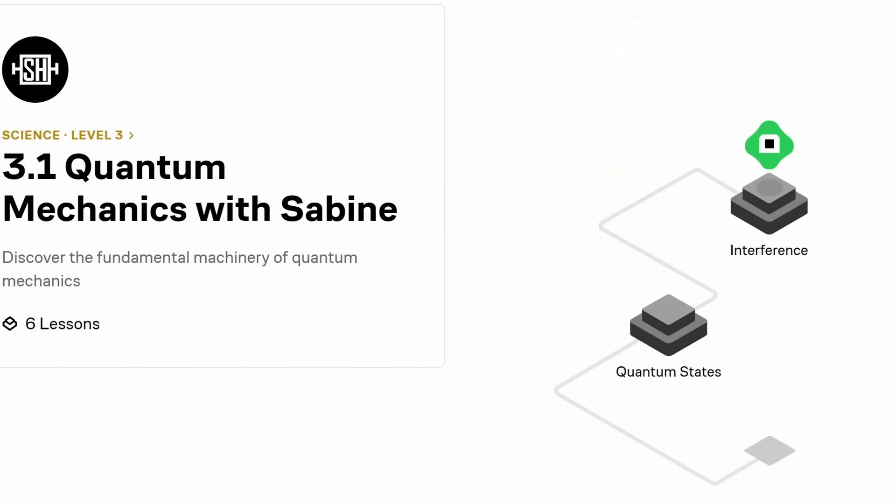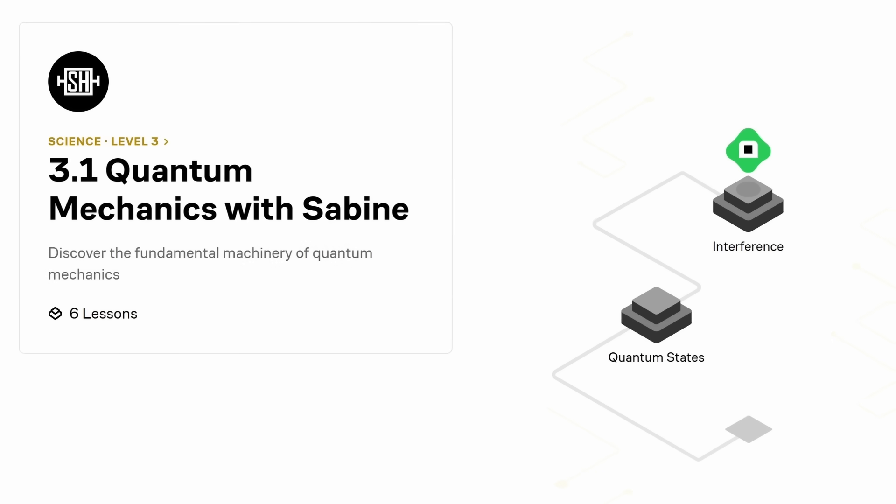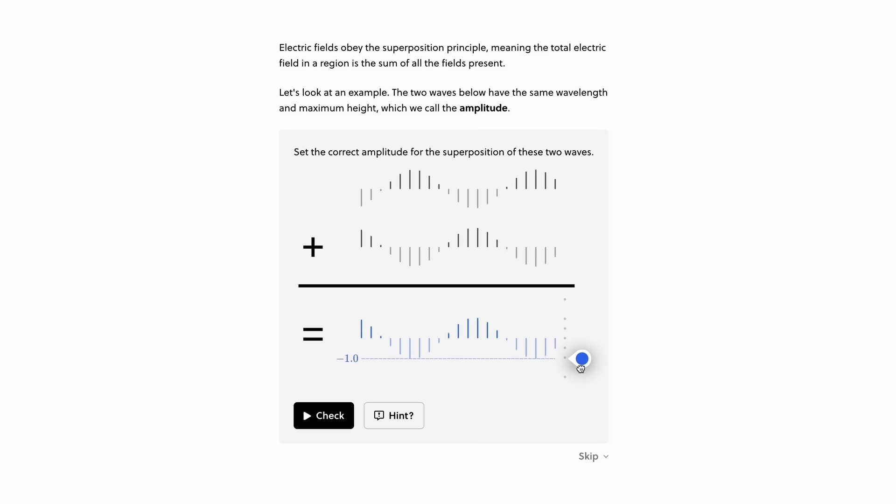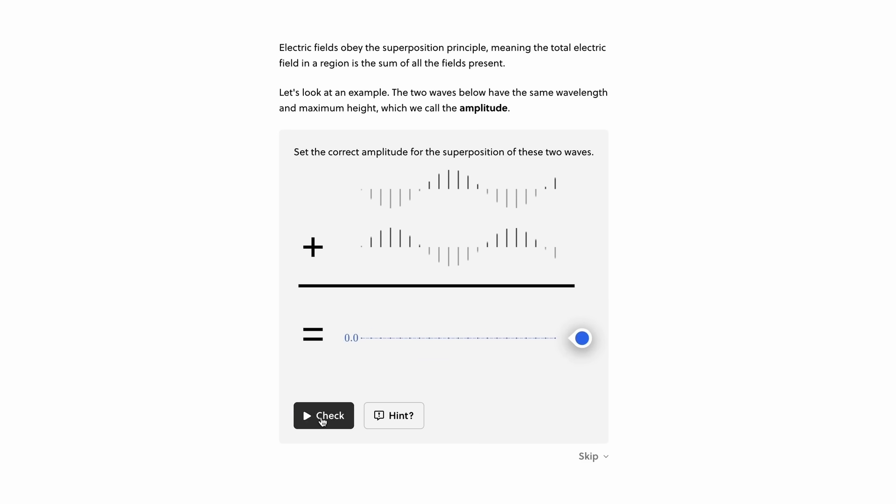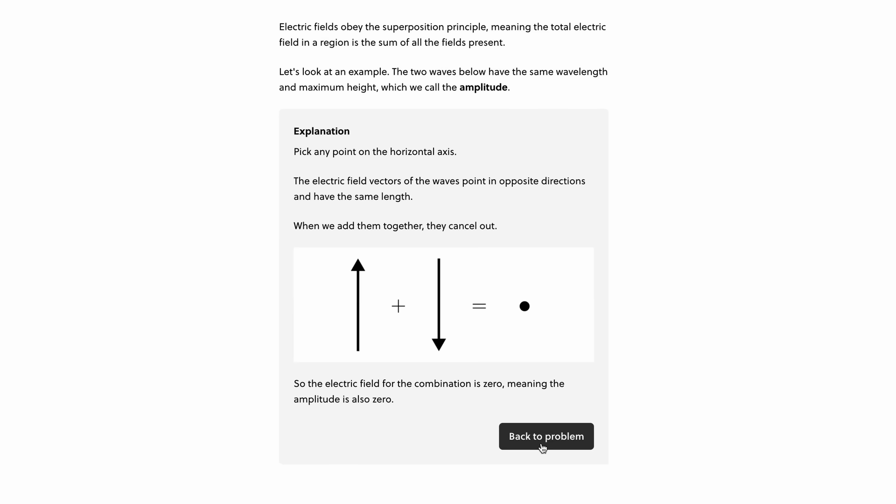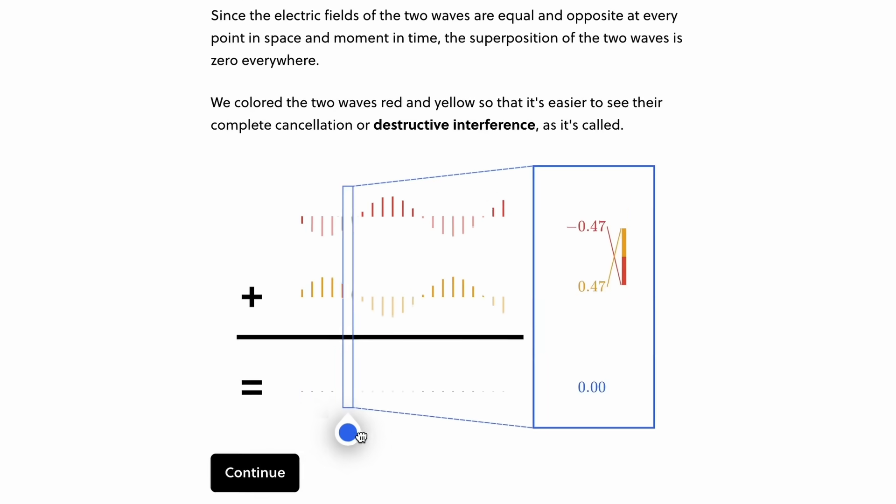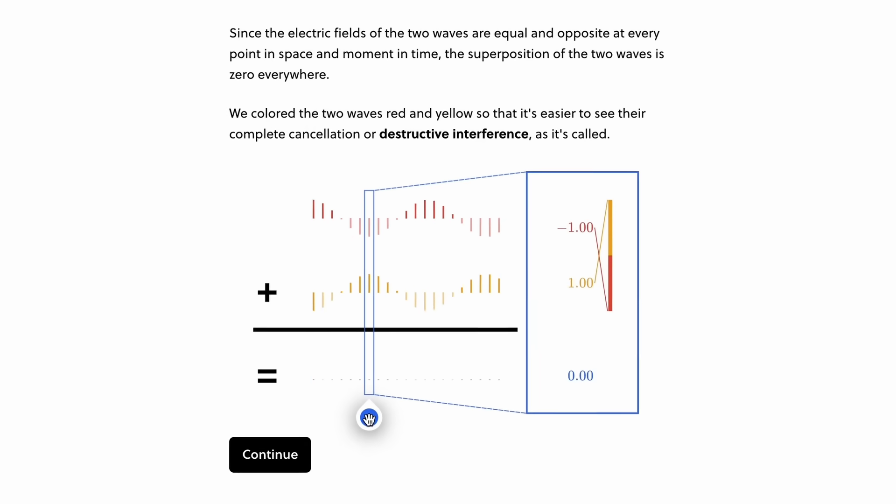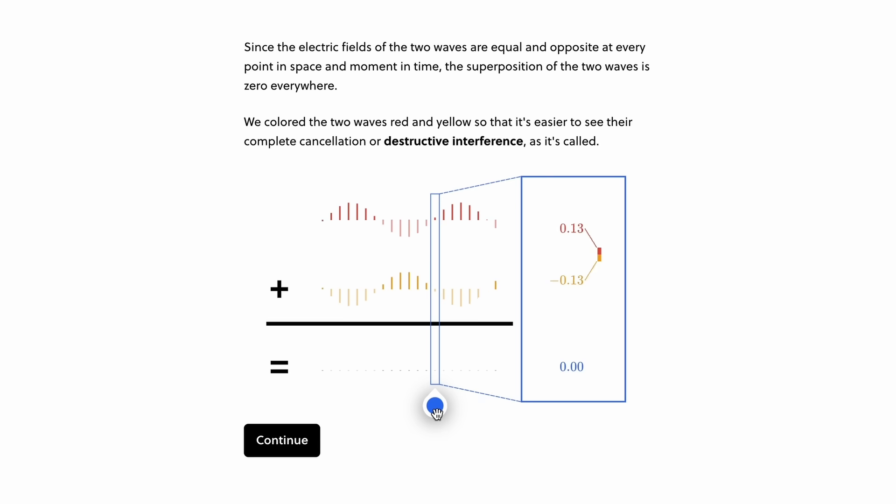I even have my own course on Brilliant. That's an introduction to quantum mechanics. It'll help you understand what a wave function is and what the difference is between superpositions and entanglement. It also covers interference, the uncertainty principle, and Bell's theorem. And after that, you can continue maybe with their course on quantum computing or differential equations. Sounds good?